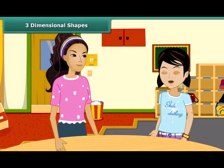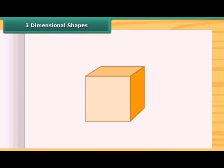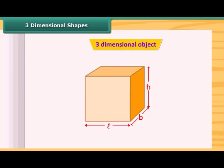What are three-dimensional shapes? A solid object having three measurements like length, breadth and height are called three-dimensional objects. Look at this cuboid. It has length, breadth and height. So this is a three-dimensional object.